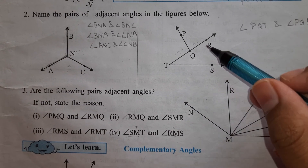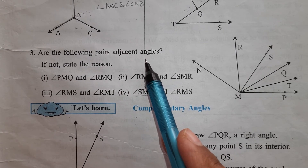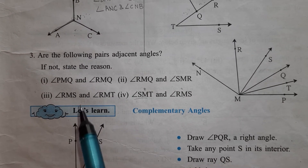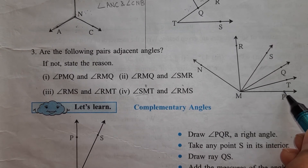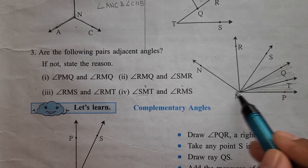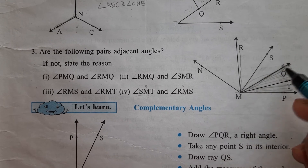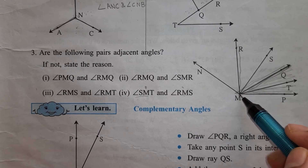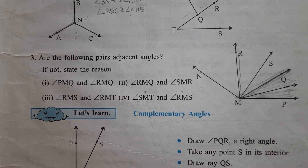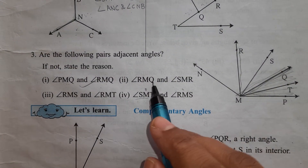Are the following pairs adjacent angles? The first one: angle P, M, Q and angle R, M, Q. M is the common vertex, M, Q is the common arm, and the interiors are separate — P, M, Q is one interior and R, M, Q is another interior. So they are an adjacent pair of angles. Next: angle R, M, Q and angle S, M, R — when one angle is inside the other, they are not adjacent.